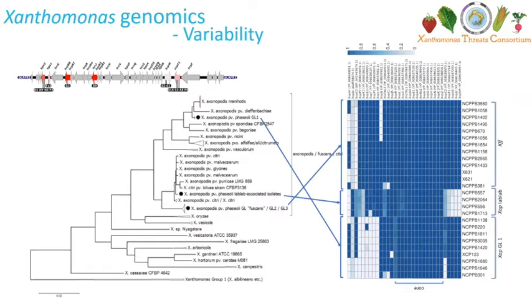Another interesting point is host specificity, which can in part be governed by the type three secretion system effectors. This is taken from a paper comparing three bean pathogens in Xanthomonas. As you can see, these three pathogens are fairly distinct, and yet they are all pathogens of different sorts of bean.